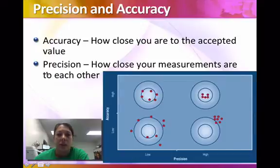Precision is how close you got to your other measurements. Is it reproducible? Accuracy is how close do you get to the accepted value, what we know to be true.